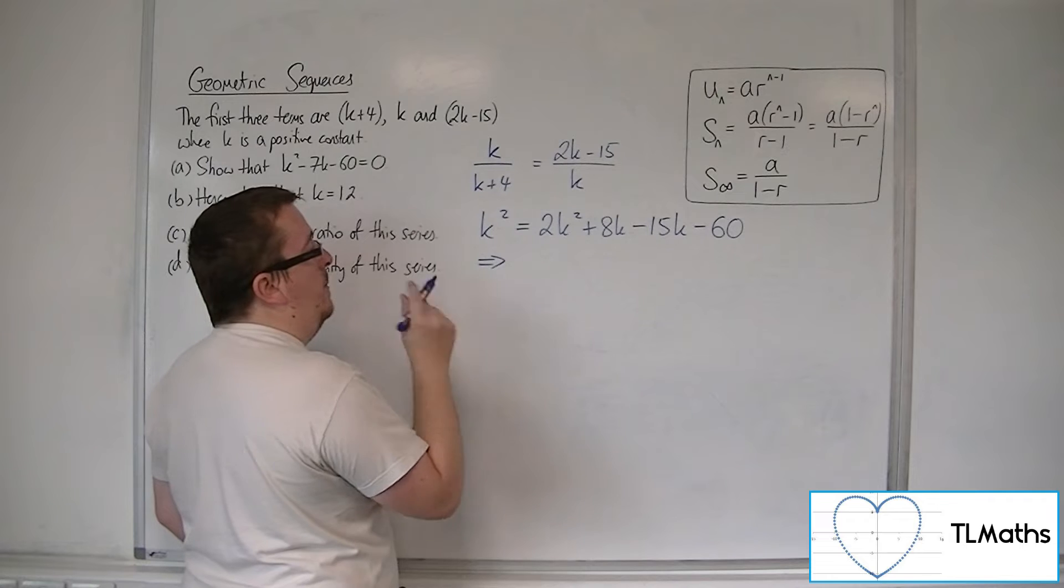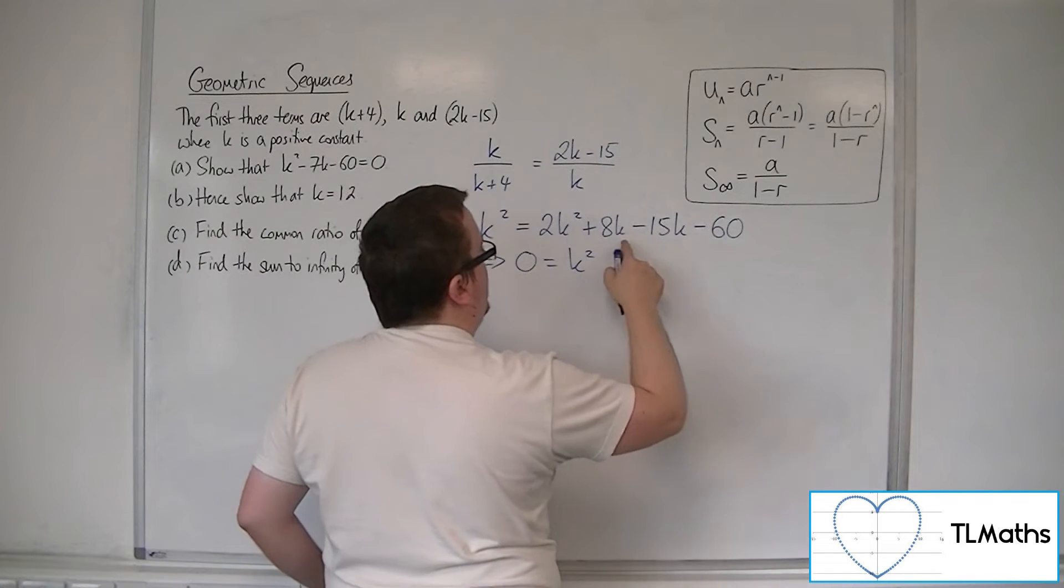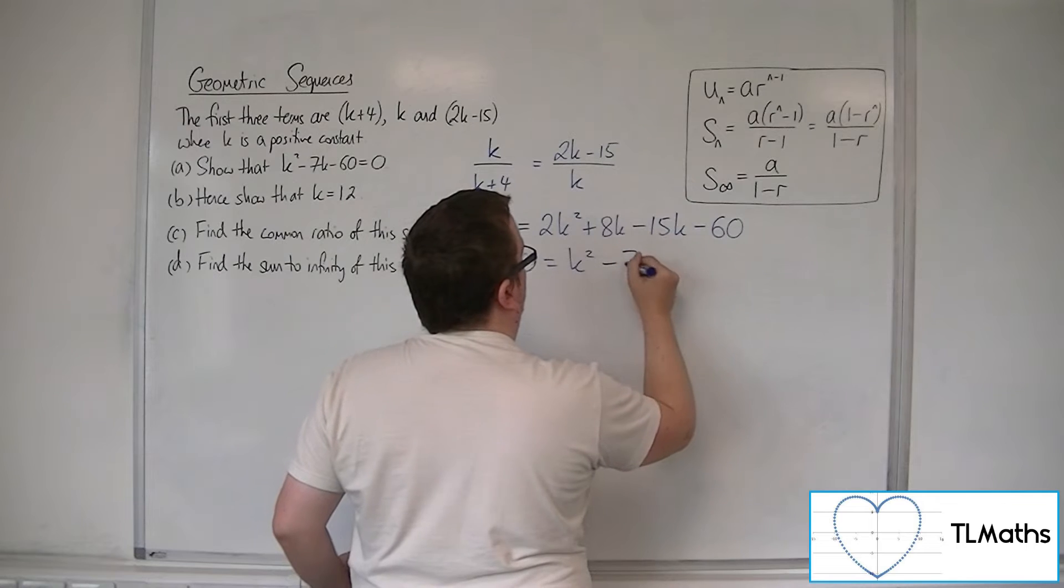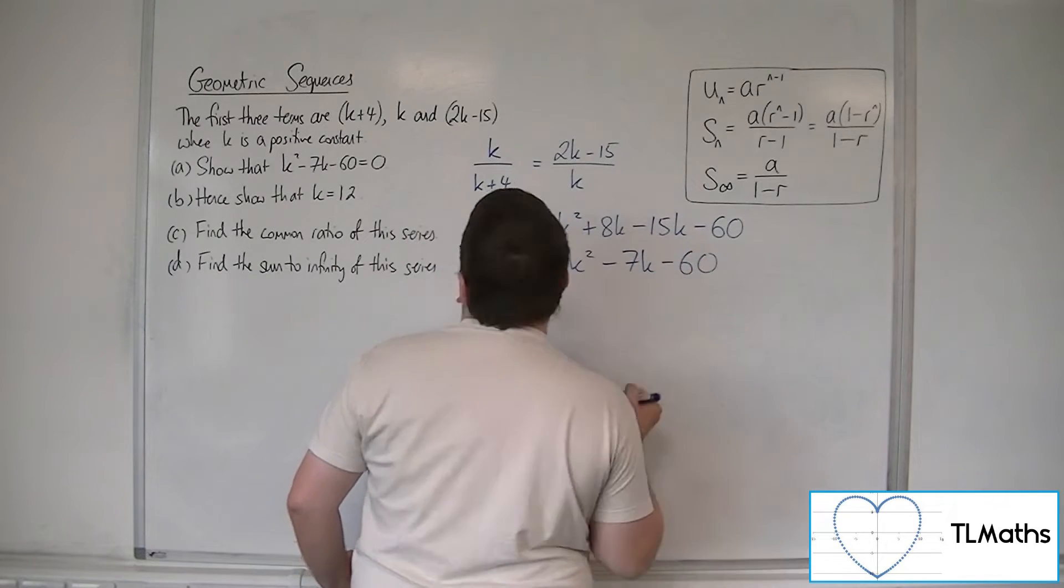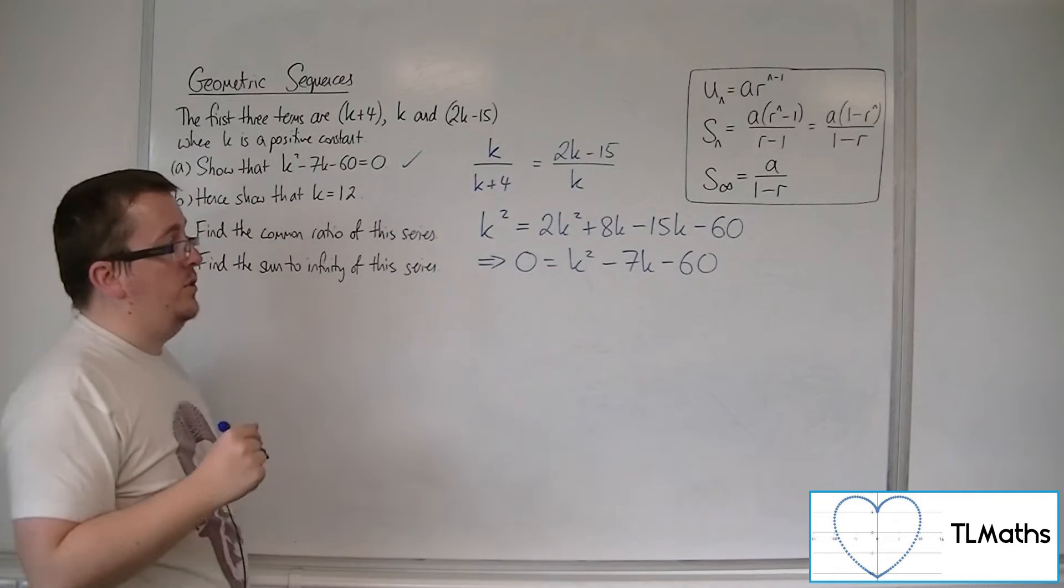So we can then put everything onto the right-hand side of the equation to get k squared, 8k minus 15k is minus 7k, we've got the minus 60. So that is the equation that we wanted to get to and arrive at.